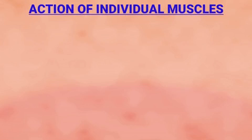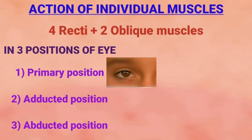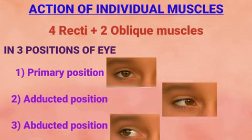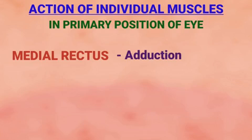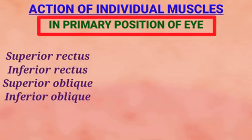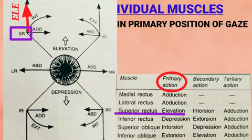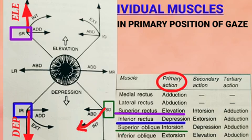Now let's see the actions of each extraocular muscle. We will learn about the four recti and two oblique muscles in three positions: primary position, adducted eye, and abducted eye. In primary position of gaze, the medial rectus causes only adduction and the lateral rectus causes only abduction. The other four muscles — superior rectus, inferior rectus, superior oblique, and inferior oblique — produce primary, secondary, and tertiary actions. The primary action of superior rectus is elevation, inferior rectus is depression, superior oblique is intorsion, and inferior oblique is extorsion.